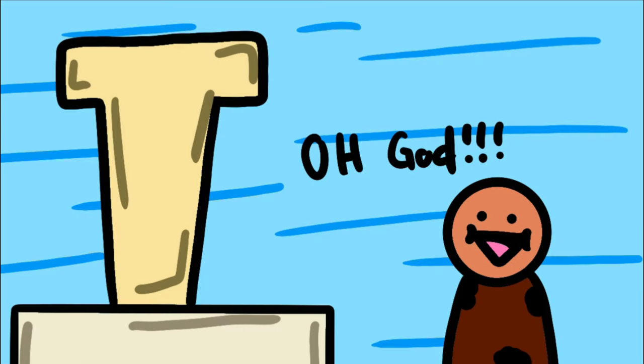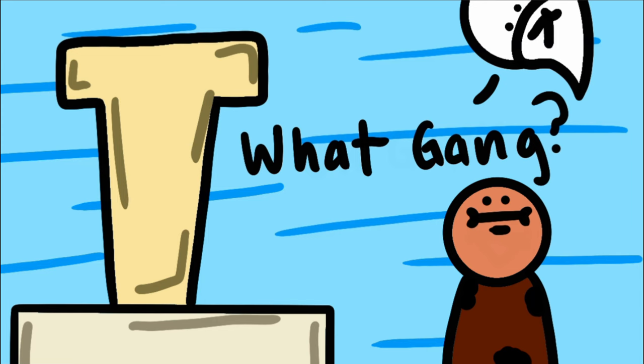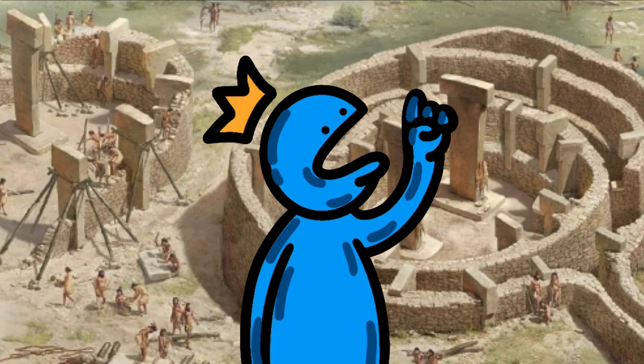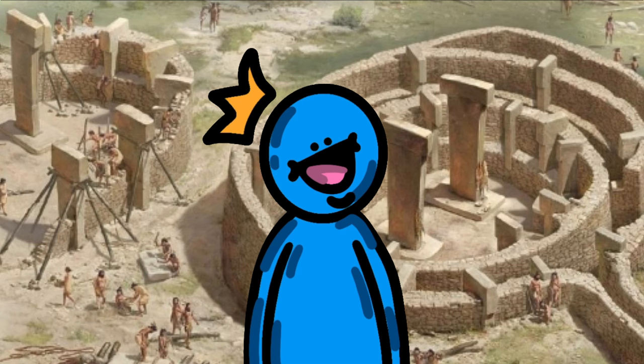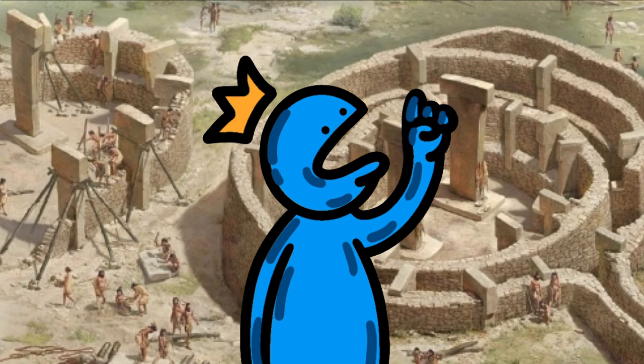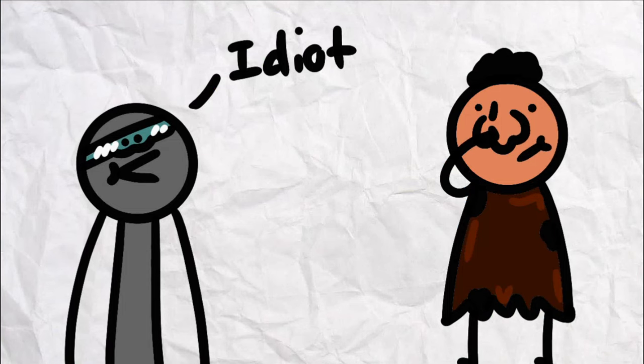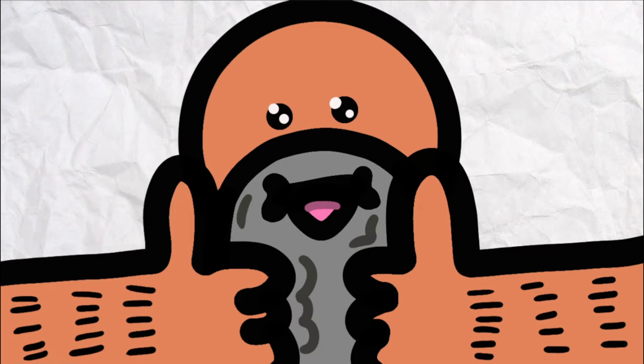It's believed to have been a religious site, possibly a temple or a ceremonial center. But what makes Göbekli Tepe so remarkable is that it challenges previously held beliefs about the development of civilization. We used to believe it was around this time that humans were still brainless morons that barely knew they had thumbs.